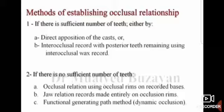لو ما عنديش sufficient number of teeth، هسجل occlusal relation بإحدى طرق: إما occlusal relation using occlusal rim على record base، أو jaw relation record مع internally placed occlusal rim، أو functional generating path method، اللي هو dynamic occlusion.